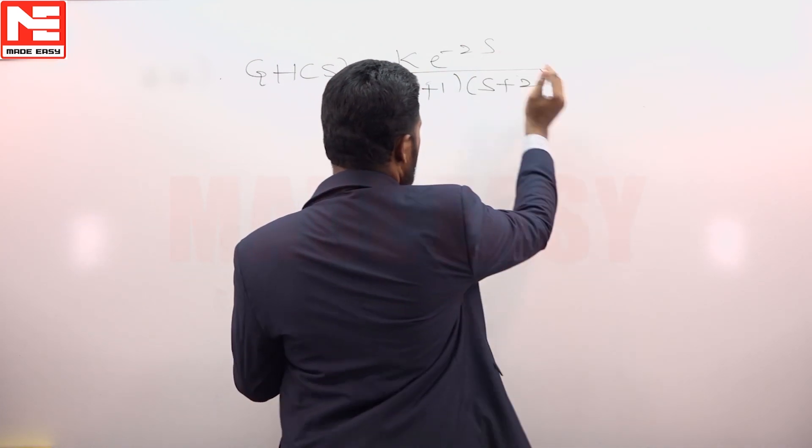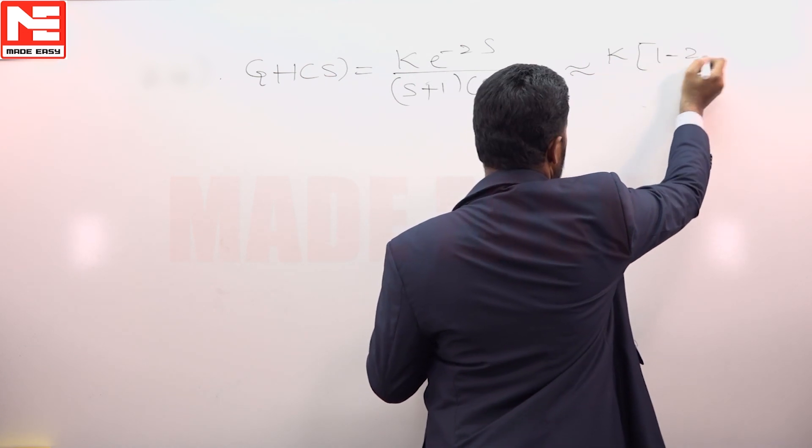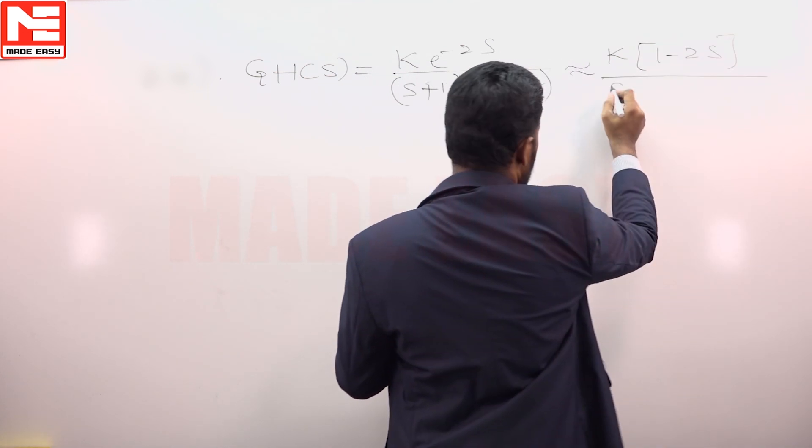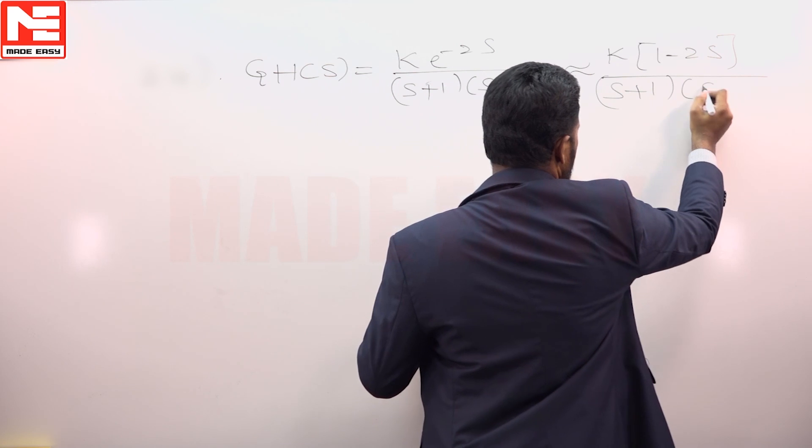This transportation delay should be approximated to the form 1 minus 2s to determine the condition for stability using R-H criteria.